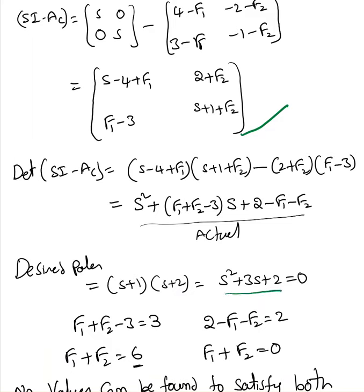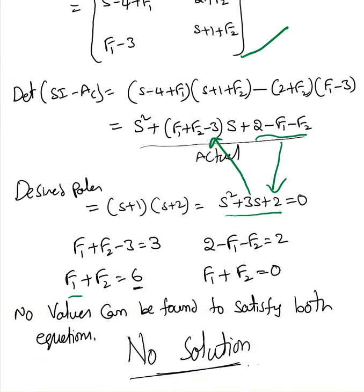Now, if we equate these two, I mean, this is the desired characteristic polynomial equation. So, when we equate these two, 3 equal to F1 plus F2 minus 3 and 2 minus F1 minus F2 equal to 2. When I equate these two, I end up with F1 plus F2 equal to 6. At the same time, I end up with F1 plus F2 equal to 0. So, it's impossible to find the values for F1, F2 to satisfy both equations. So, there is no solution for this.